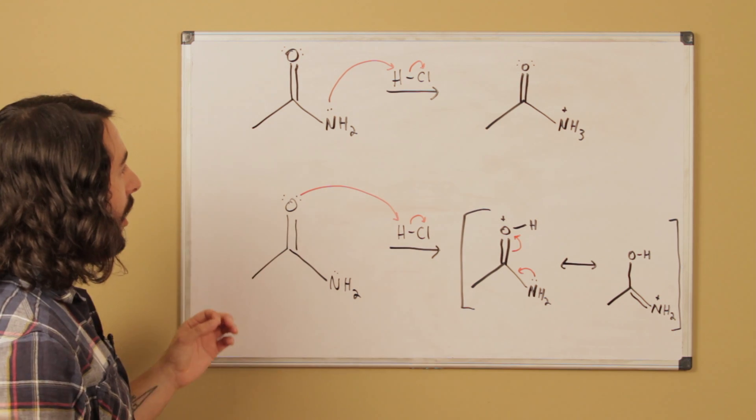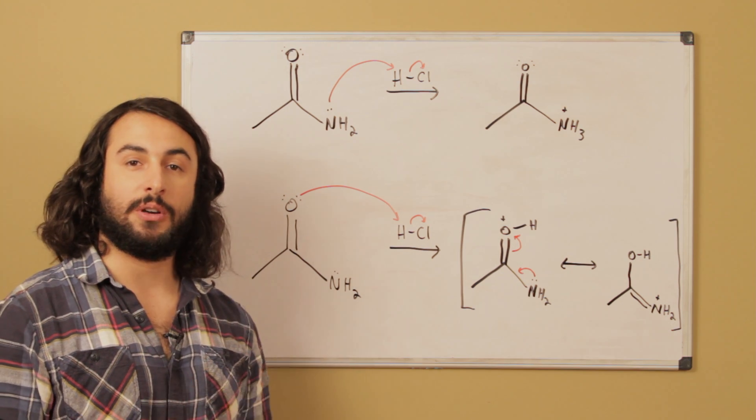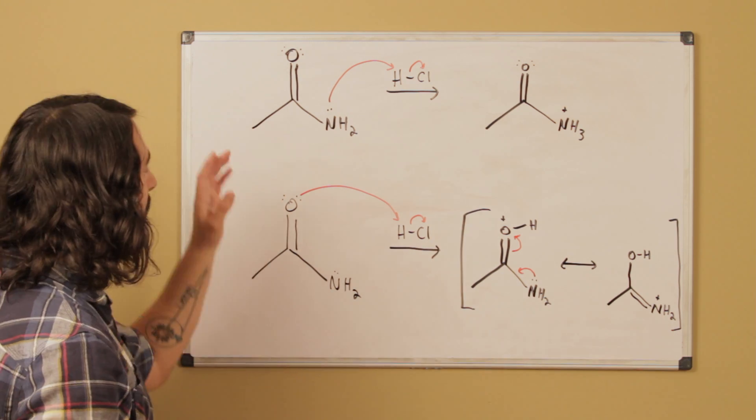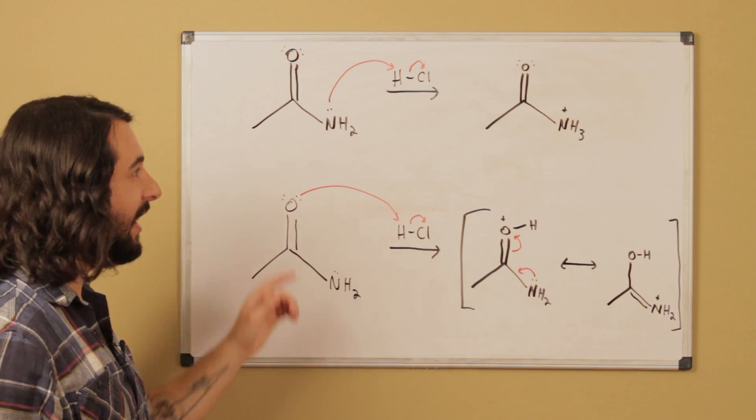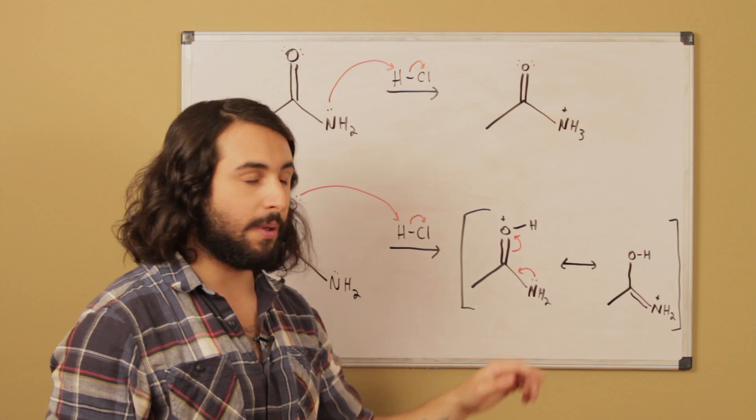And so where is it going to go? The way that we answer that question is we have to look at the resulting conjugate acids. So let's say first of all that the lone pair on the nitrogen goes ahead and grabs that proton. Now this is what would result, so we would have a formal positive charge on the nitrogen atom.